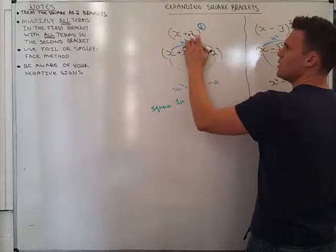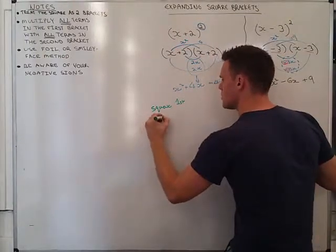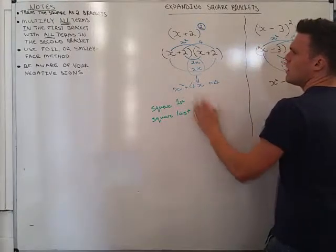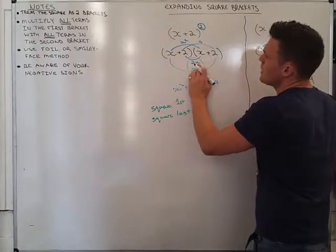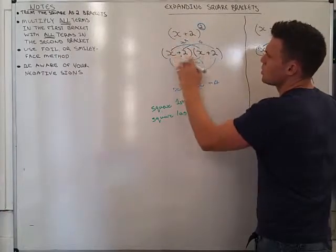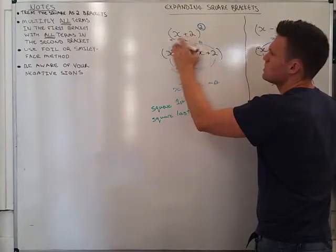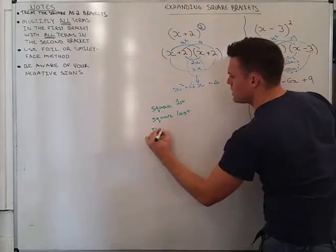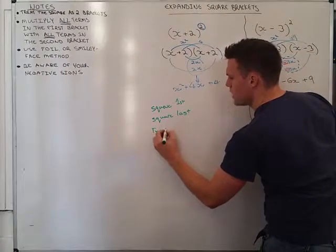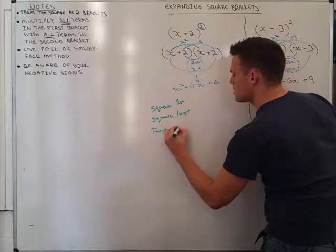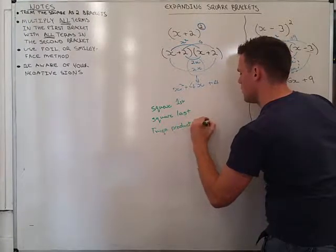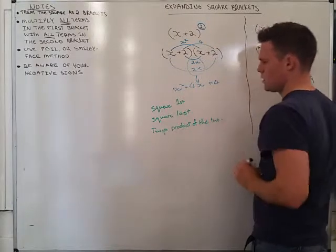And the way I got 2x is I simply went 2 times x, or x times 2. So, x times 2, and I got 2 of them. So, I can say, well, I'll have twice the product of the 2.